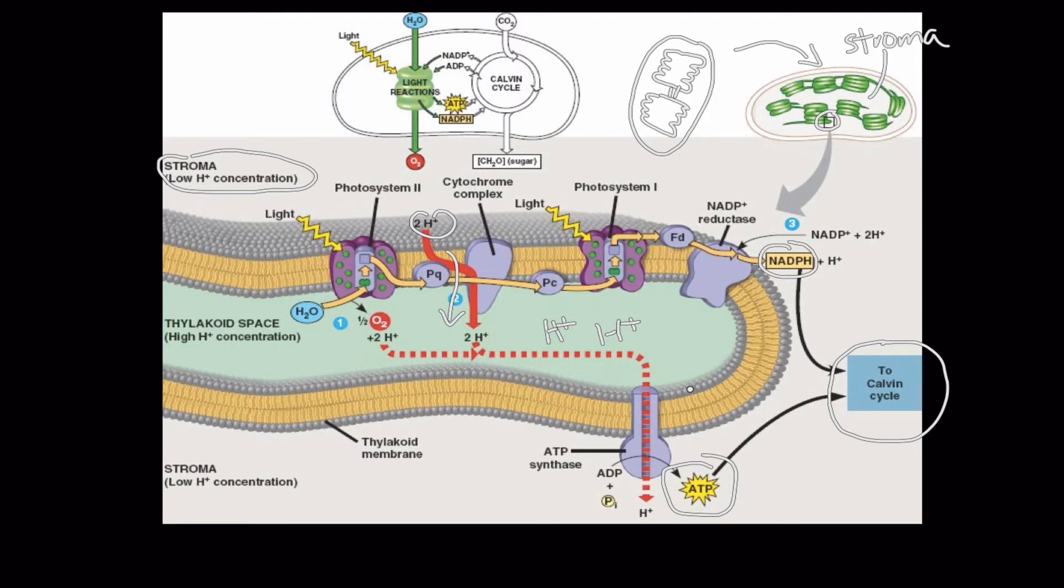So chloroplasts and mitochondria function a lot alike, but the hydrogen ions are flowing in opposite directions, though the effect is the same. The concentration gradient difference in hydrogen ions is being used to provide the energy, the free energy, to phosphorylate ATP.